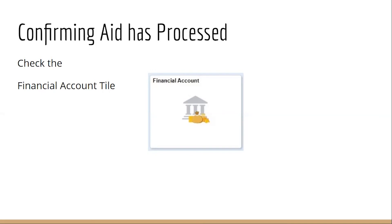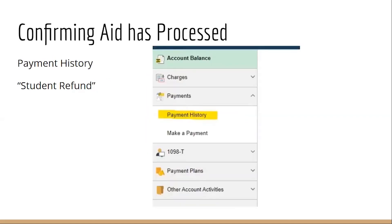Remember that if you have applied and gotten all verification documents in before the priority deadline, which is typically six weeks before the quarter, financial aid will process the week before or the first week of the quarter. You'll find a record of that payment in your financial account tile. There is a link that says payments and in the drop down it shows payment history. In your payment history, it will show any payments that have been made on your behalf. The wording you're looking for to know that a check has been made for any additional financial aid after tuition fees have been paid is called student refund. When you see student refund, that means a check has been created by the cashier and a check is on its way to you.